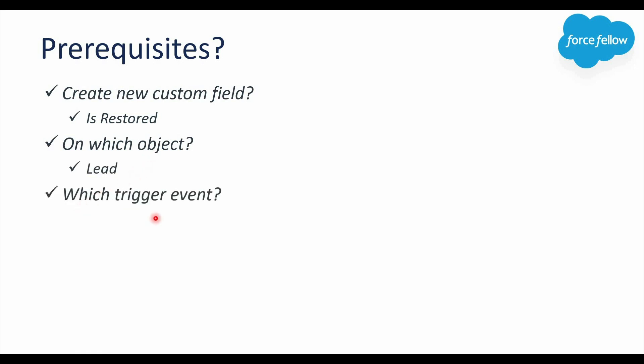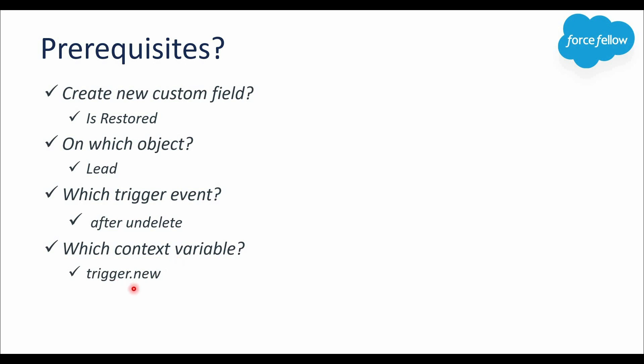Next: which trigger event will we use? As the requirement says, we have to add an identifier to all the undeleted lead records, which means we will update a field on the lead record when it is getting undeleted or restored. So the trigger operation will be undelete. But should the type be before or after? Of course after, because we don't have a before undelete trigger event. We will use after undelete as the trigger event. For the context variable, we'll use Trigger.new, and if we need both record IDs and records, Trigger.newMap as well.